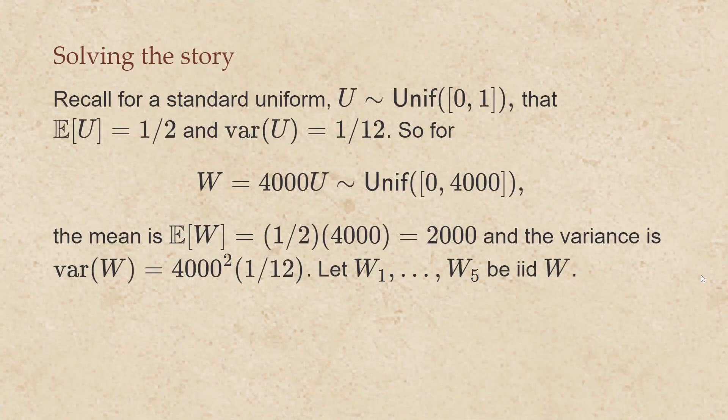Now recall for a standard uniform, u is uniform from 0 to 1, and that has an expected value of 1/2 and a variance of 1/12. So if I multiply that by 4,000, that's going to give me a uniform over 0 to 4,000 with mean 2,000 and variance 4,000 squared divided by 12. Now let's take five random variables w sub 1 through w sub 5 that are iid with the same distribution as w.